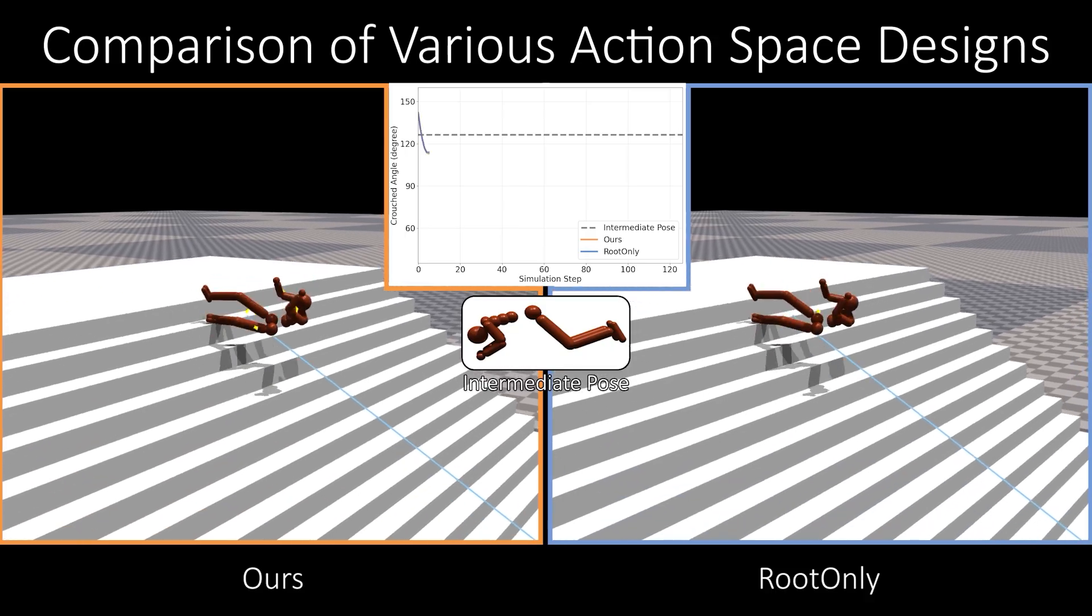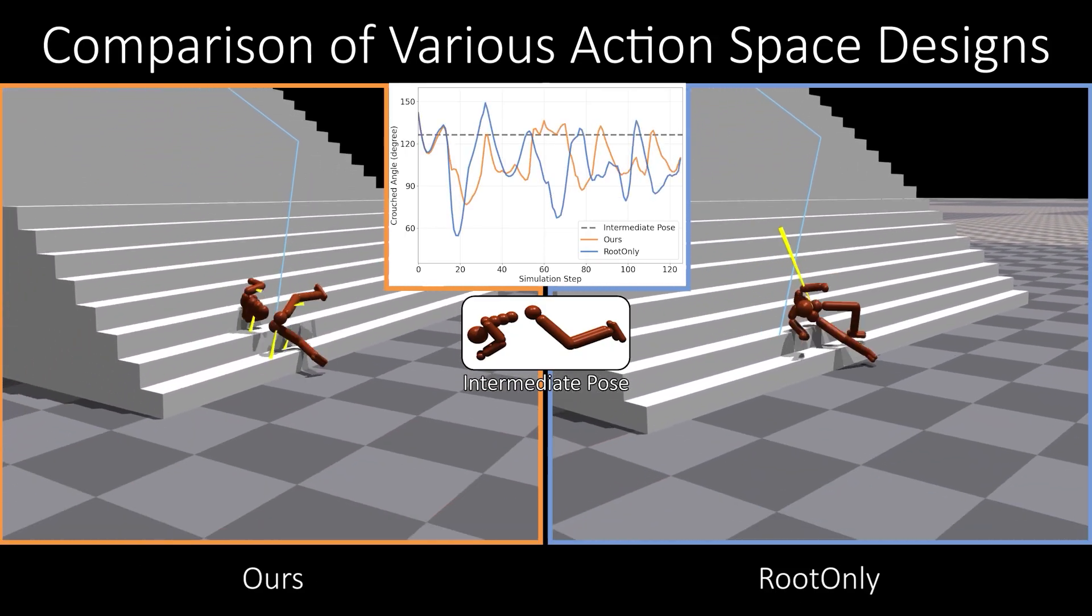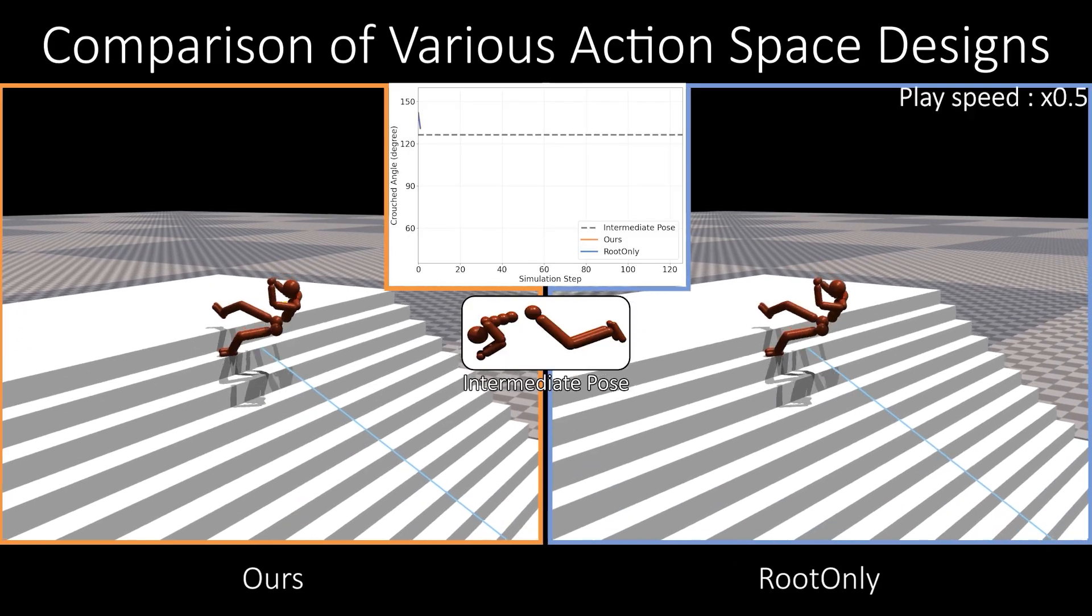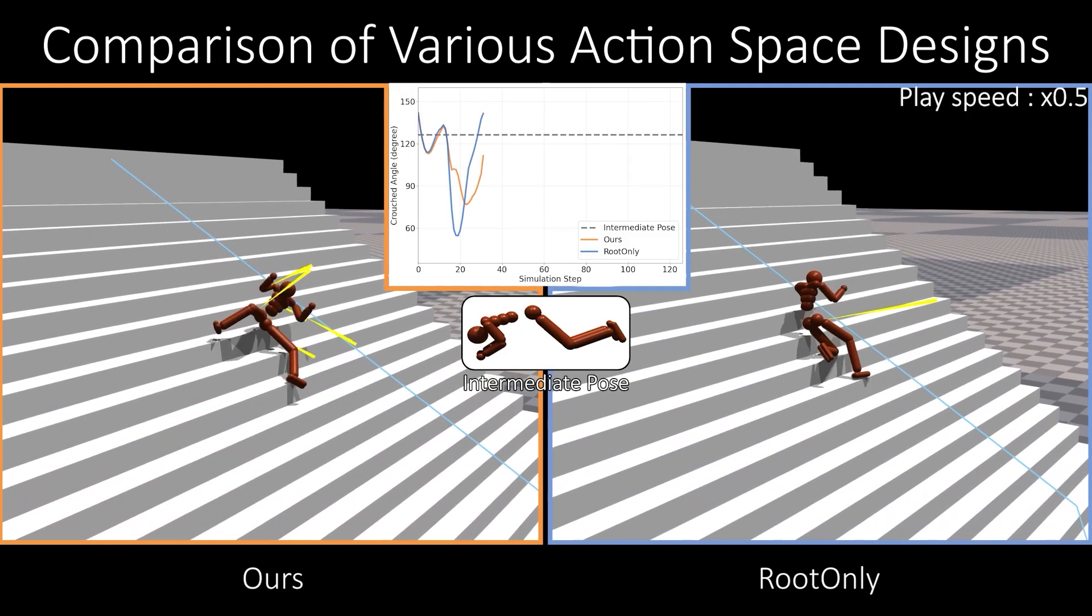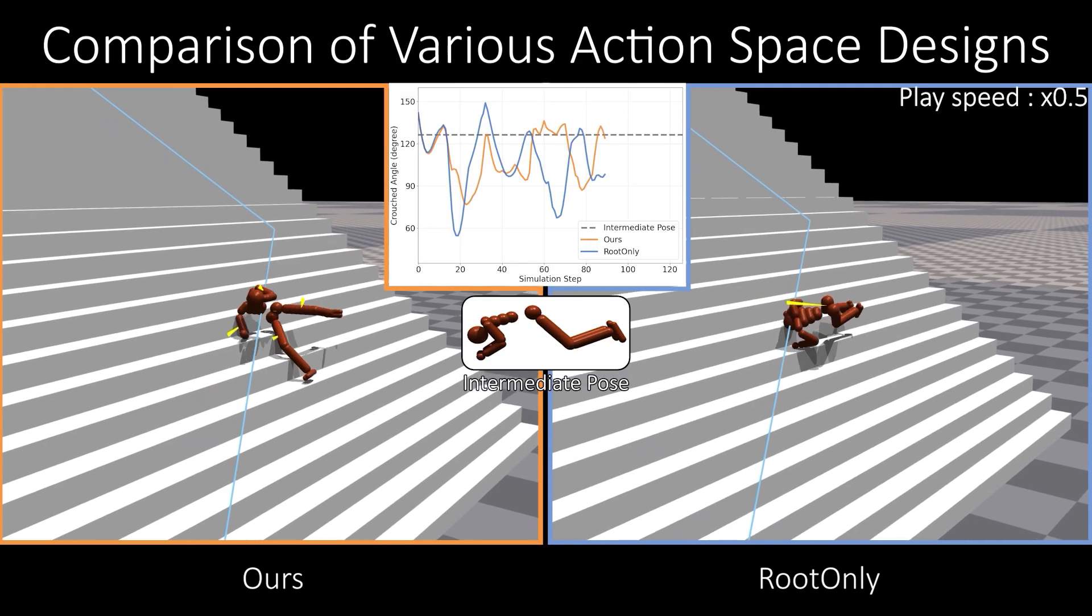In the second scene, the actor's crouching angles are evaluated during stair descent. The graph in the middle shows the crouched angles of ours and root-only. Root-only exhibits 20% larger angle variation and excessive bending, indicating poor posture tracking.